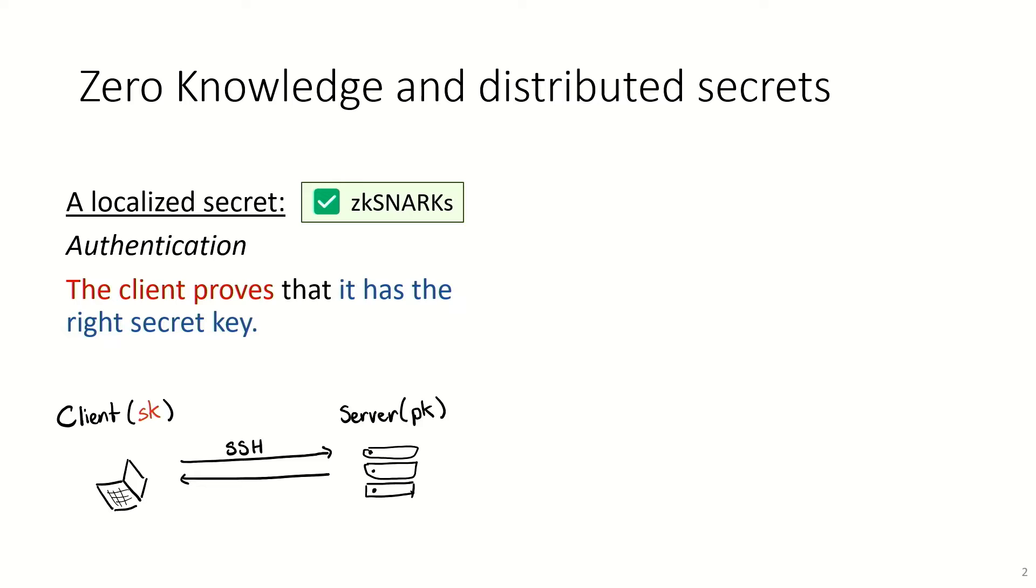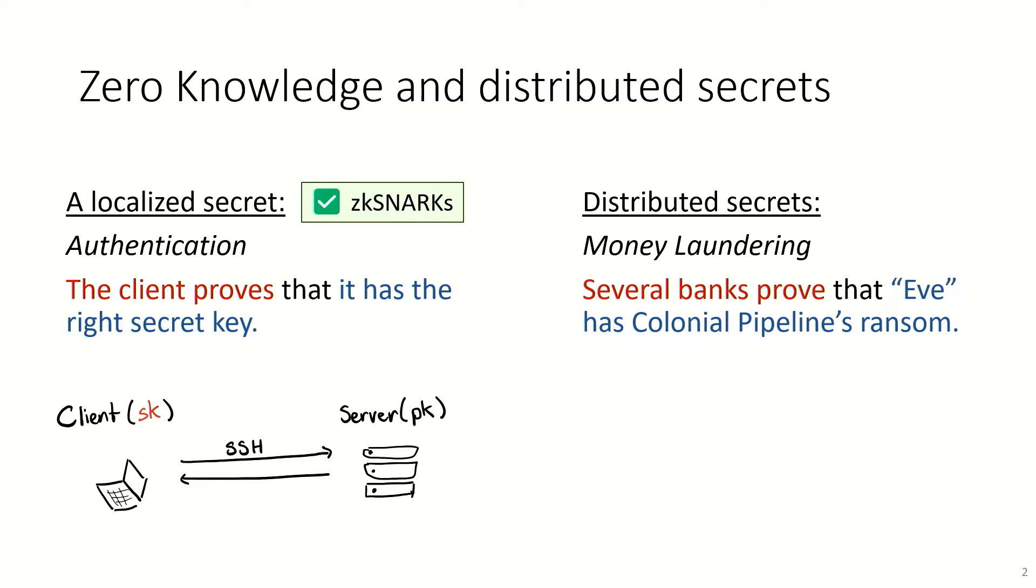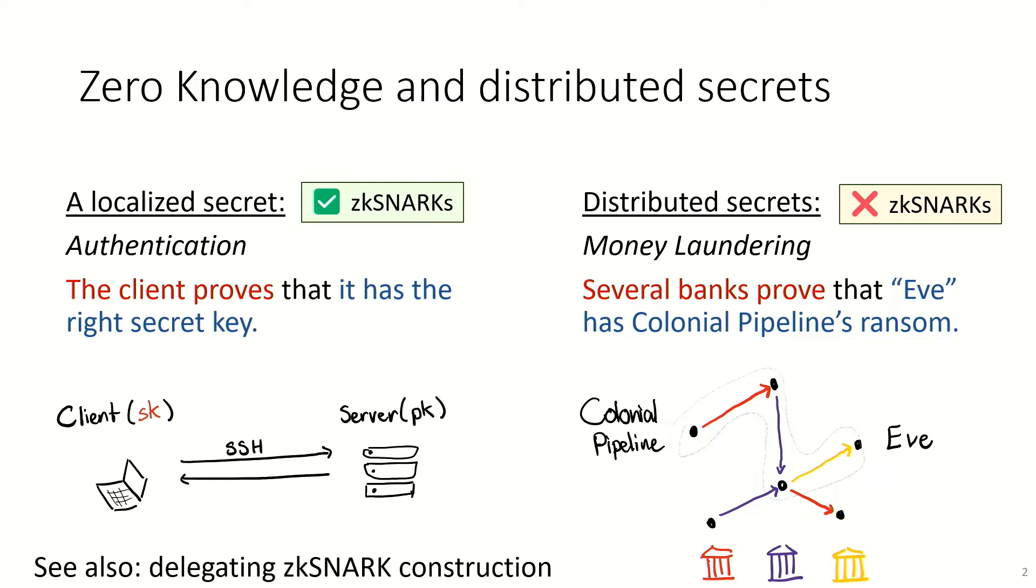However, not all secret information is localized. Consider another scenario. A collection of banks have evidence that some entity, Eve, has obtained a ransom paid by colonial pipeline. And these banks want to prove that that statement is true. This amounts to showing the existence of a certain kind of path in the global transaction graph.